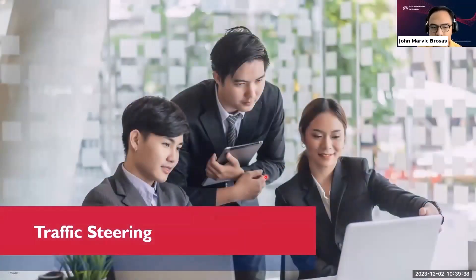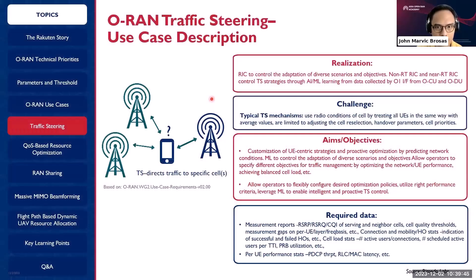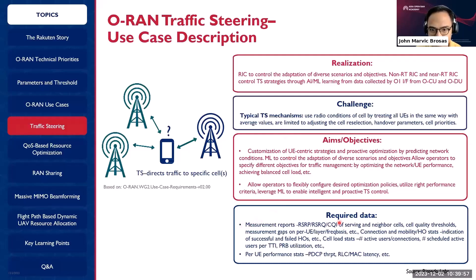Let's go to the second use case — one of the use cases is traffic steering. Rate to control the adaptation of diverse scenarios and objectives. Use radio conditions of cells by treating UEs in the same way with average values. So we have this required data.